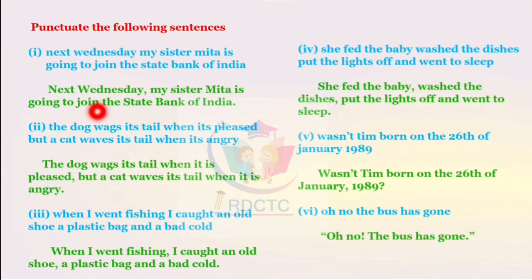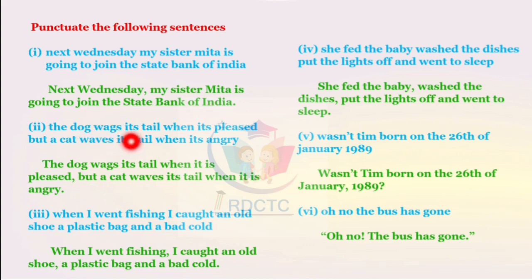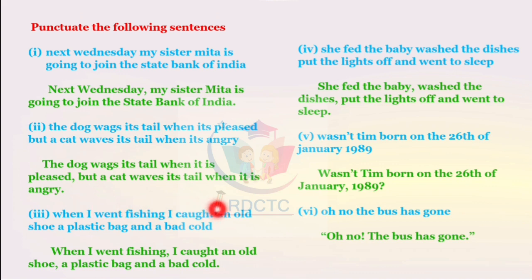Now see the next question — punctuate the following sentences. 'Next Wednesday, my sister Mita is going to join the State Bank of India.' Full stop. 'The dog wags its tail when it is pleased, but a cat waves its tail when it is angry.' Full stop. 'When I went fishing, I caught an old shoe, a plastic bag, and a bad cold.' She fed the baby, washed the dishes, put the lights off, and went to sleep — with commas separating each item.